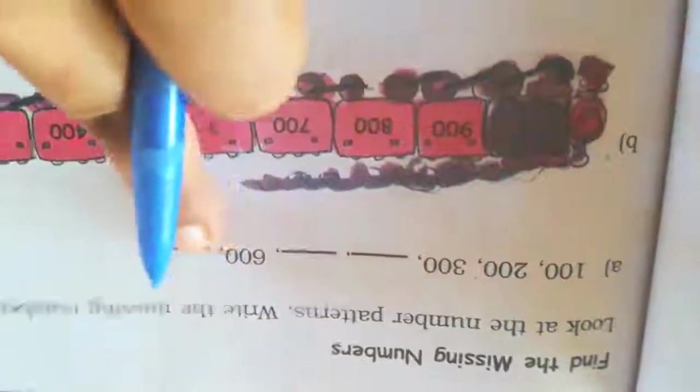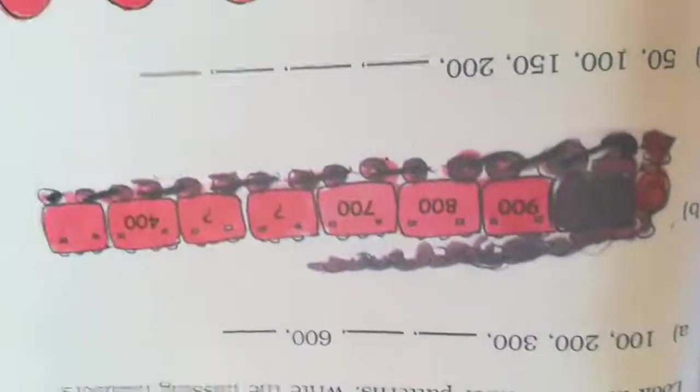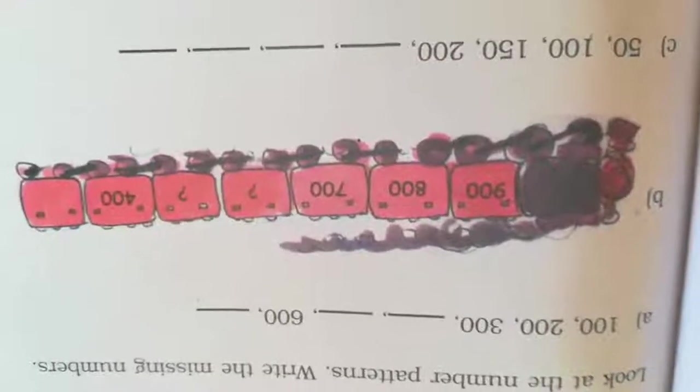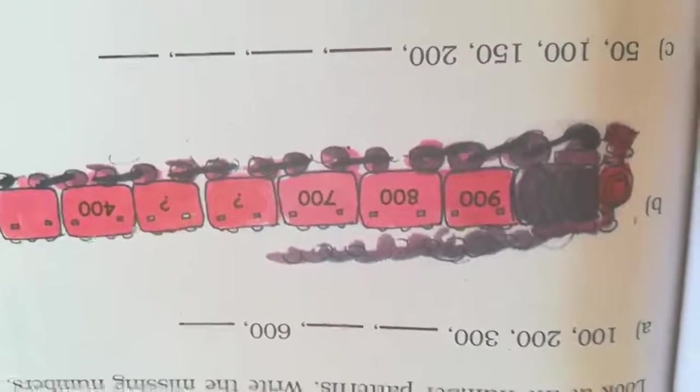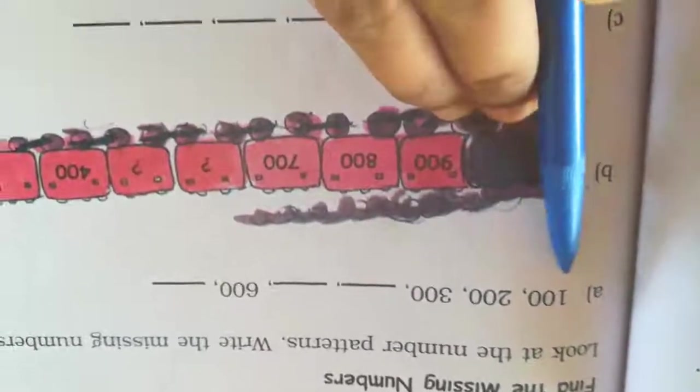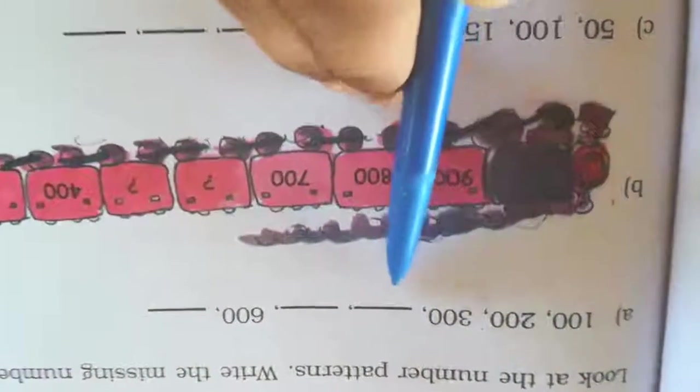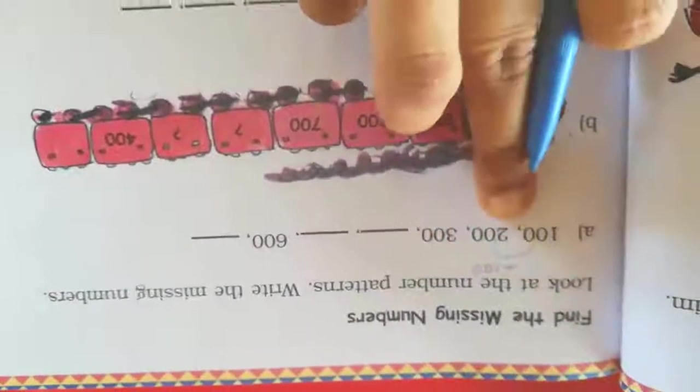Now look at the next page: Find the missing numbers. Look at the number pattern and write the missing numbers. In class 2 you already know about patterns. Pattern: 100, 200, 300 — next number is 400, because they add 100 each time. 200 plus 100 is 300, 300 plus 100 is 400, 400 plus 100 is 500, 500 plus 100 is 600, 600 plus 100 is 700. Then 900.